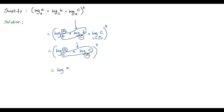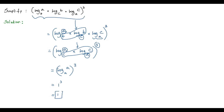We get log A to the base A, and we carry over the exponent 3. We already know that when the base and argument of a logarithm are equal, the value is 1. So we have 1 to the power of 3, which equals 1. Therefore, the simplification of the given logarithmic expression is equal to 1.